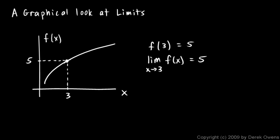For every value of x near 3, the value of the function is close to 5. And we can make the value of the function as close as we want to 5 simply by keeping our x values sufficiently close to 3.